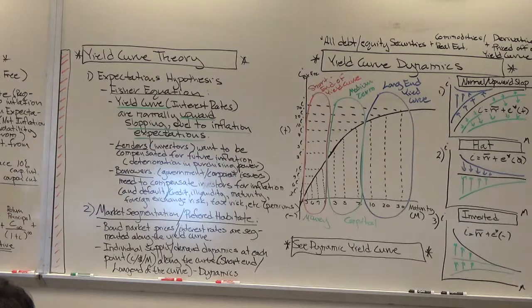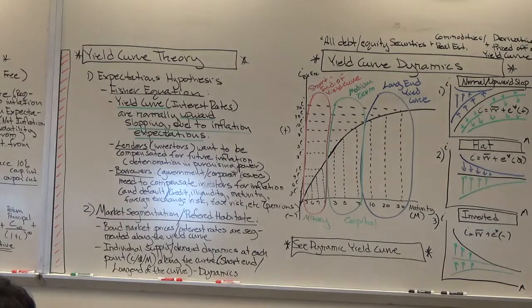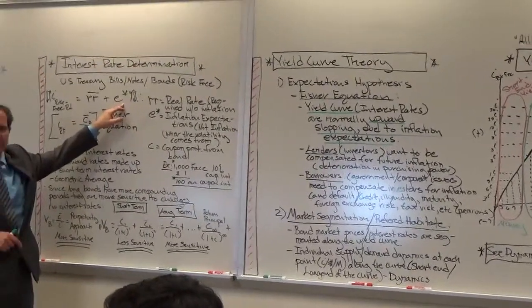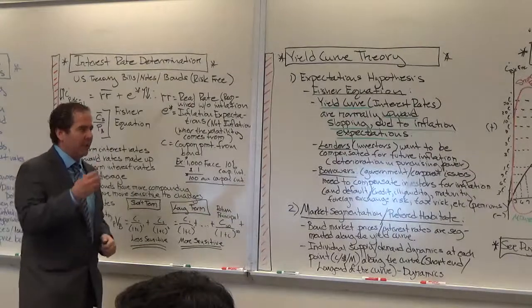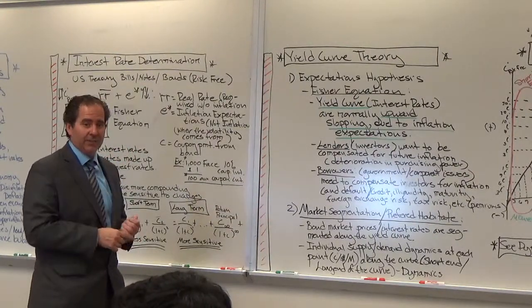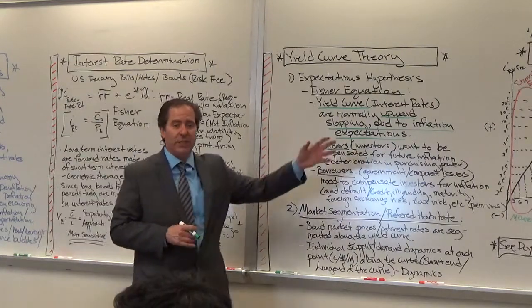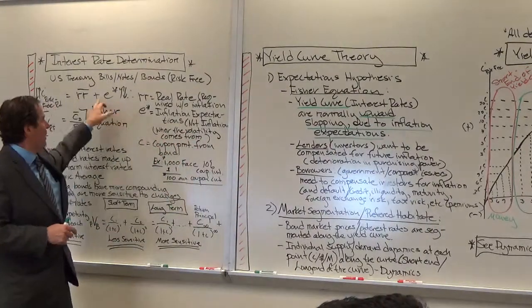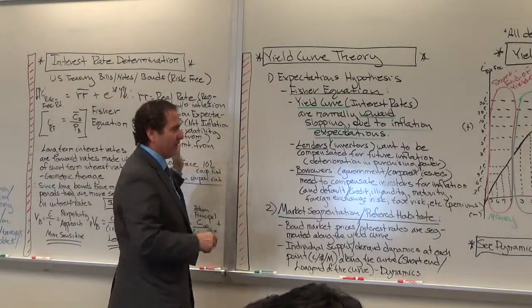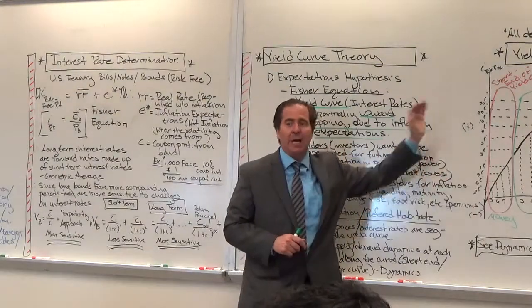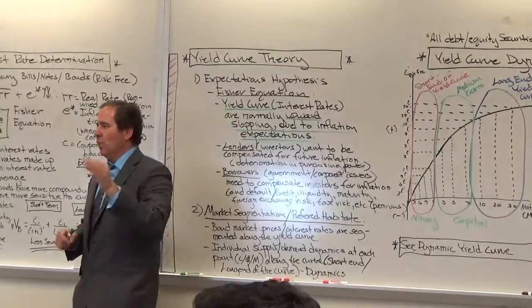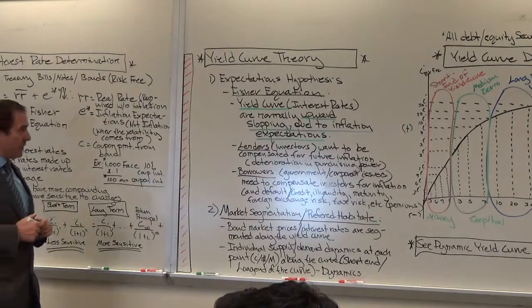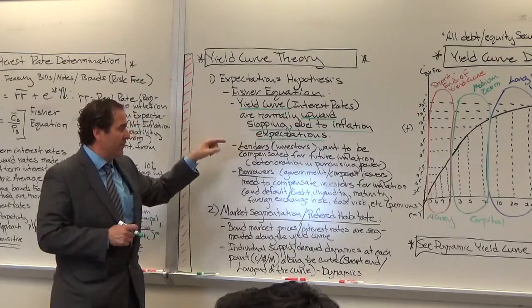And then I'll talk about the segmentation in a minute. So the theory basically states, which is the Fisher equation, is that the upward sloping nature of the yield curve is due to inflation expectations. So investors want to be compensated for the inflation risk, the deteriorating aspects associated with the inflation. And the longer the maturity, the more inflation risk premium there needs to be tacked onto this real rate. So normally, because of the inflation expectations in the future, the yield curve is upward sloping. The upward sloping yield curve is called the normal yield curve or the normal curve.